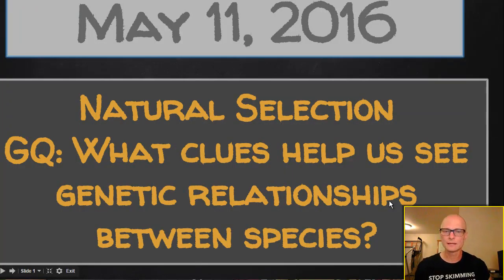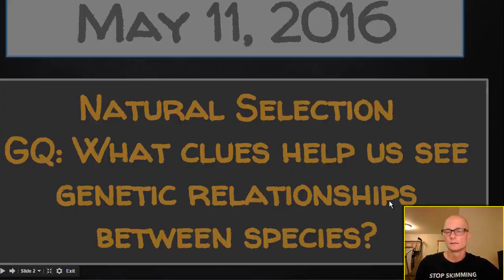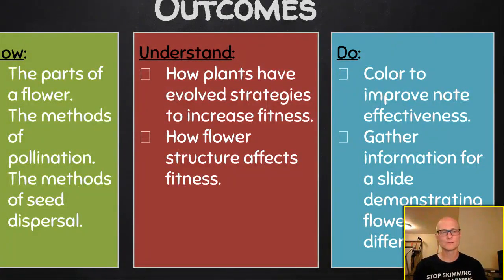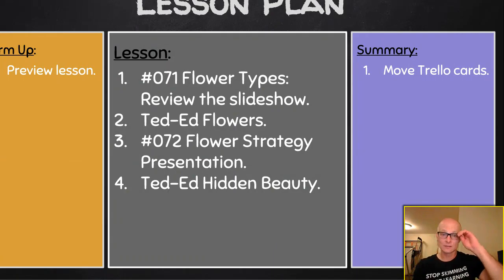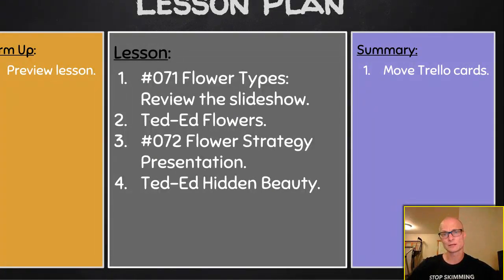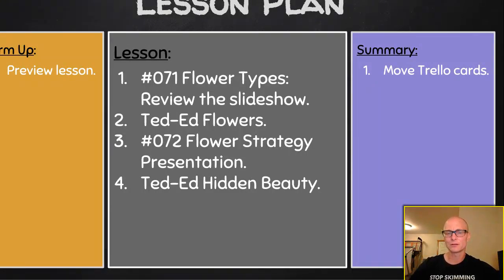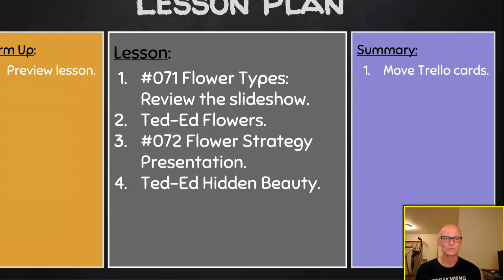Wednesday the 11th of May — continuing on with our plants' fitness and strategies. We're going to review the 071 slideshow, make sure we understand complete vs. incomplete, perfect vs. imperfect, and how it affects pollination methods and genetics of flowers and their fitness. We'll watch a TedEd video on flowers and the amazing strategies that plants use and the coevolution of those and their pollinators.